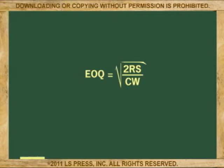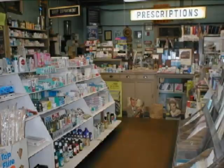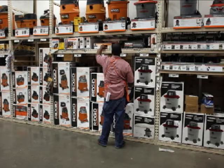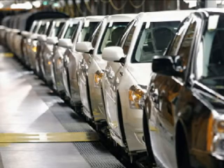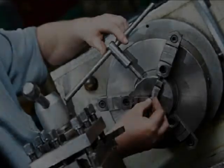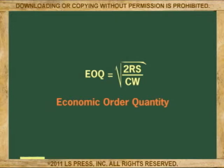Here is a simple formula used by retailers such as supermarkets, drugstores, and home improvement centers to manage inventory. It is also used by manufacturers, big and small. It is called the Economic Order Quantity, or EOQ for short. The beautiful thing about this equation is that all you need is basic algebra to apply it.